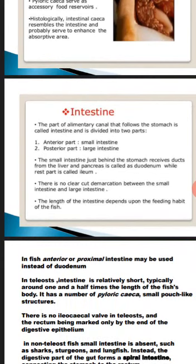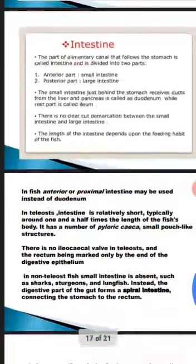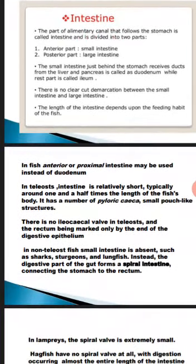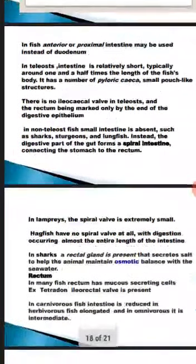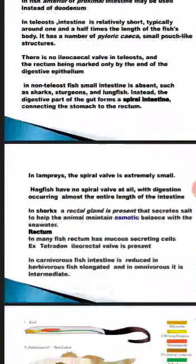In teleost fish, the intestine is relatively short — typically around one and a half times the length of the fish body — and has pyloric caeca with small pouch-like structures. There is no ileocecal valve in teleosts. In non-teleost fishes such as sharks, sturgeons, and lungfishes, the small intestine is absent. Instead the digestive tract forms a spiral intestine connecting the stomach to the rectum. In lampreys the spiral valve is extremely small, while in hagfishes there is no spiral valve at all. In sharks, a rectal gland is present that secretes salt to help maintain osmotic balance with seawater.